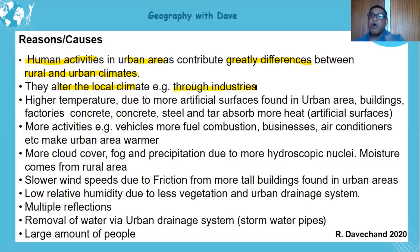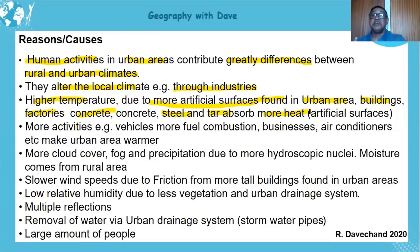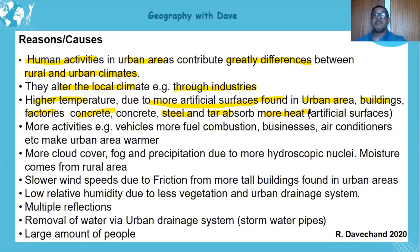Industries in the urban area give off heat, smoke, and pollutants which trap heat, making the urban area warmer. Higher temperatures are due to more artificial surfaces — buildings, factories, concrete, steel, tar — which absorb more heat than open surfaces. These materials retain heat: tar roads stay hot long after the sun goes down, whereas an open land surface cools quickly.